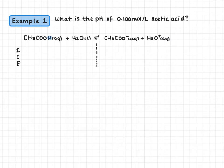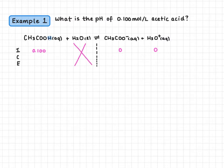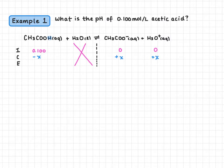In an ICE table, we assume that the initial concentration of our conjugate base and hydronium is zero. So we have zero acetate and zero hydronium, and we have 0.100 moles per liter acetic acid. Because we have water in our ICE table, we can just ignore this entire column — its concentration won't change. We represent the unknown changes with X: acetic acid will lose X moles per liter, and acetate and hydronium will each gain X. That gives an equilibrium concentration for acetic acid of 0.100 minus X, and X for acetate and hydronium.